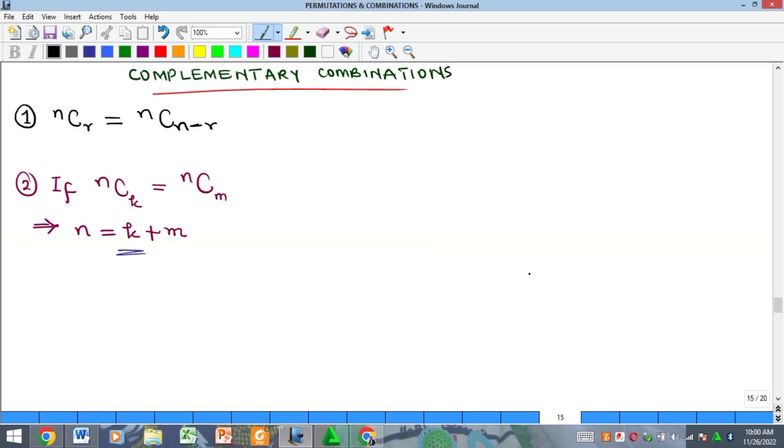Hello everyone, welcome to my YouTube channel. My name is Precious and in this video we'll quickly look at the concept of complementary combinations. Two combinations are said to be complementary if they satisfy this condition. An example is if I have something like 5C2, it is actually equal to 5C(5-2), which is 5C3.